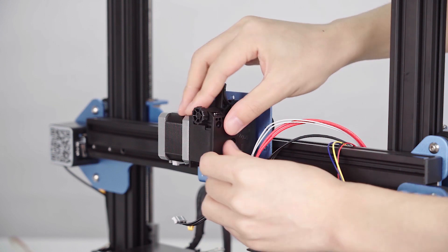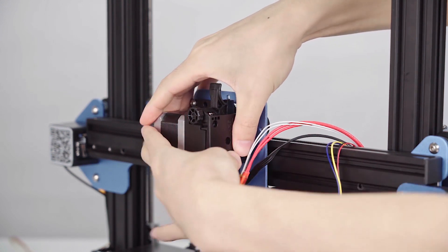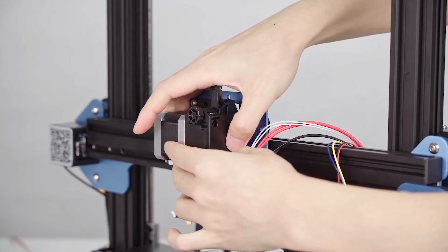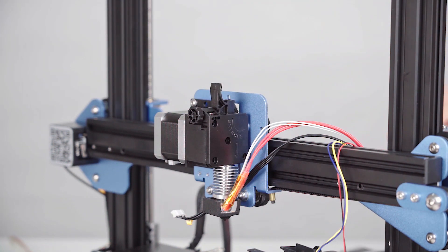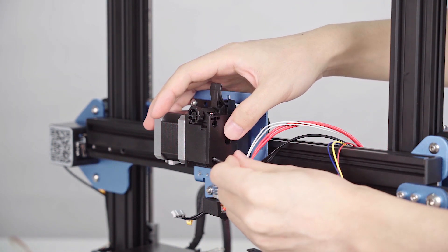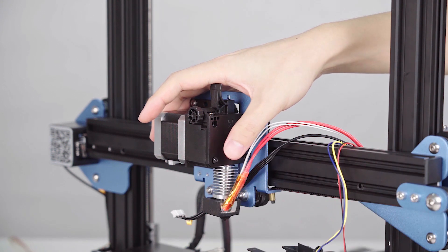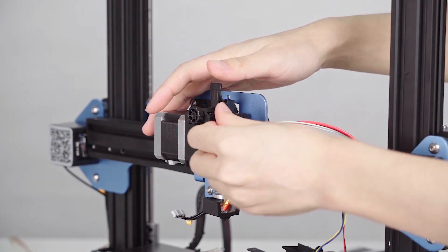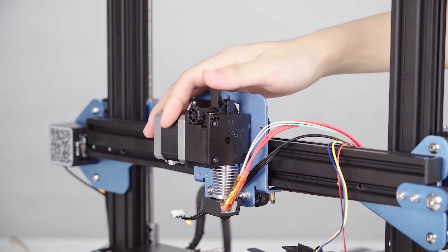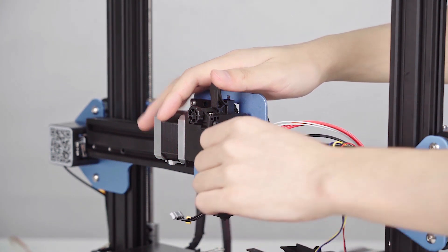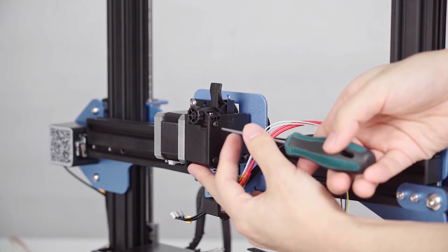Now, we are going to use the extruder bracket holder to cover it. Then, use the screws to tighten it. Yes, we need to apply those three tiny flat screws.